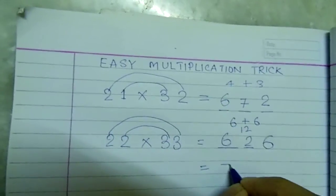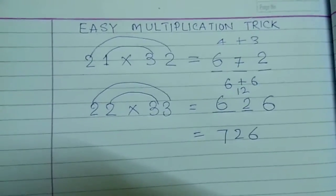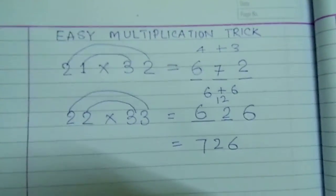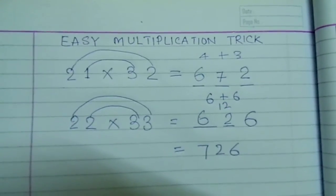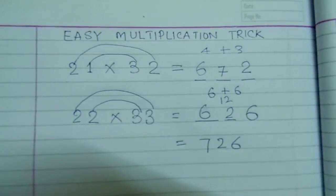That is, our number will be 726. This is an easy method to multiply numbers and if learned well, it can save you precious time in examination and you end up solving more questions and accuracy is also guaranteed.